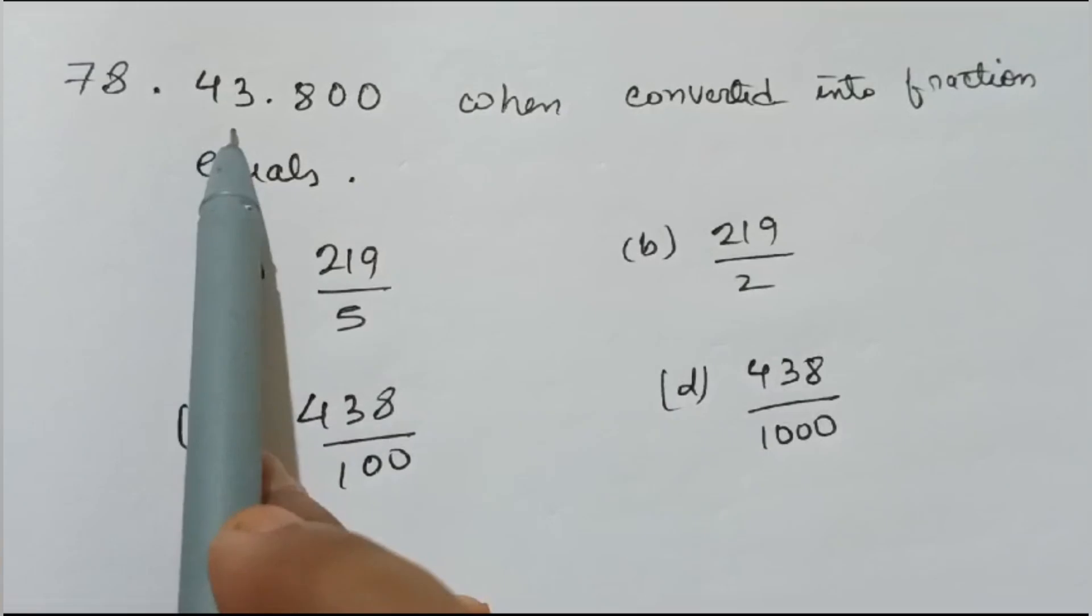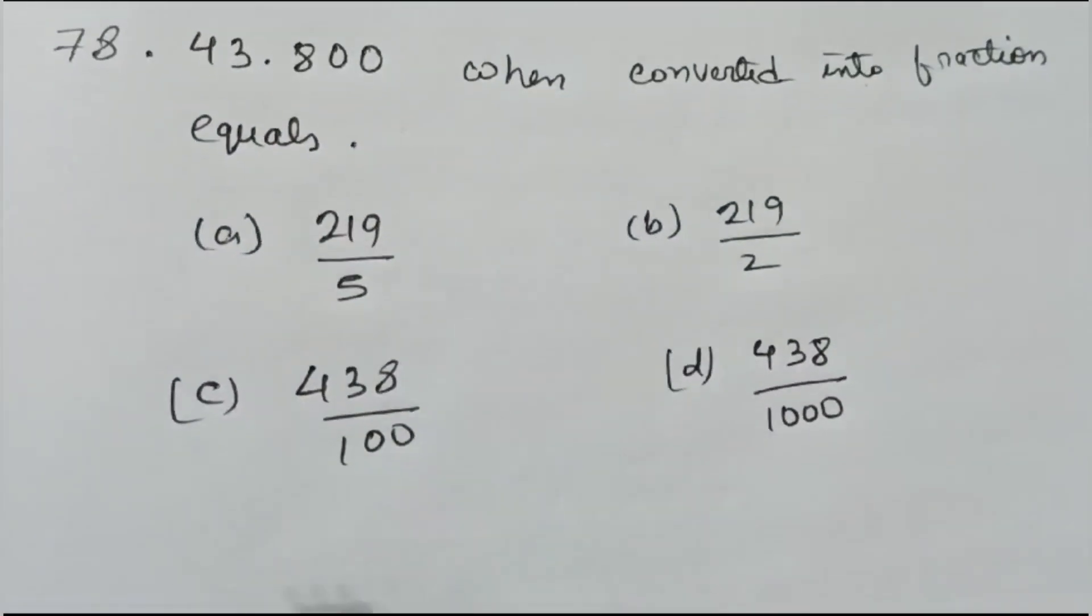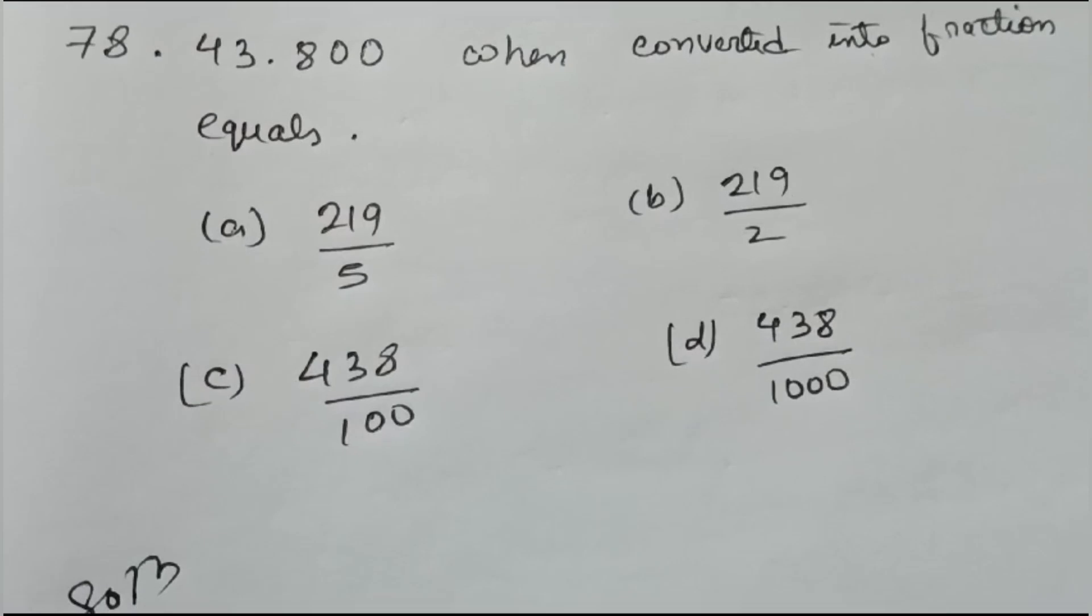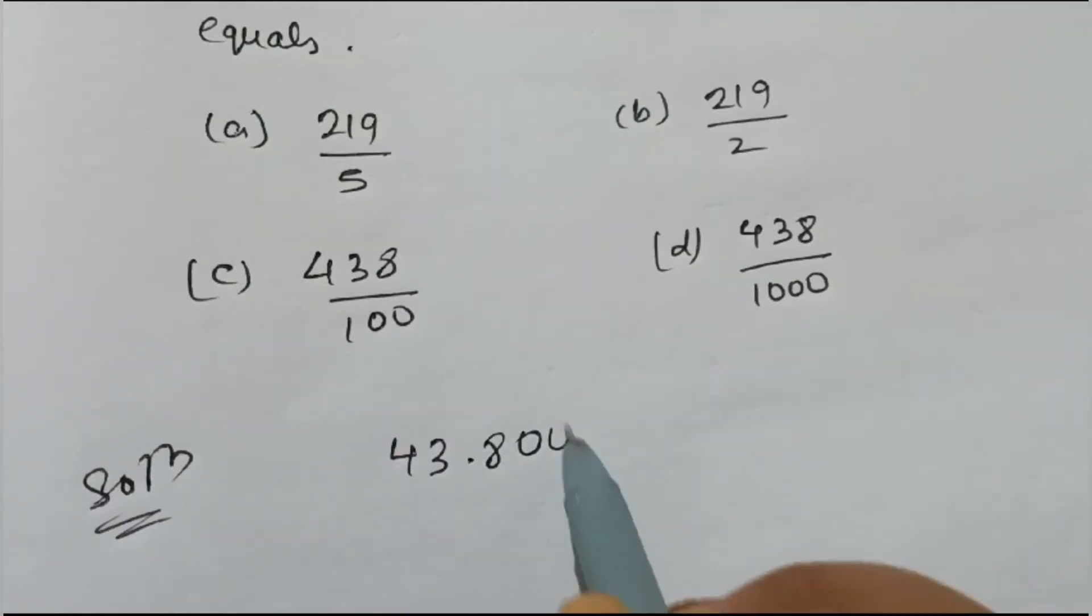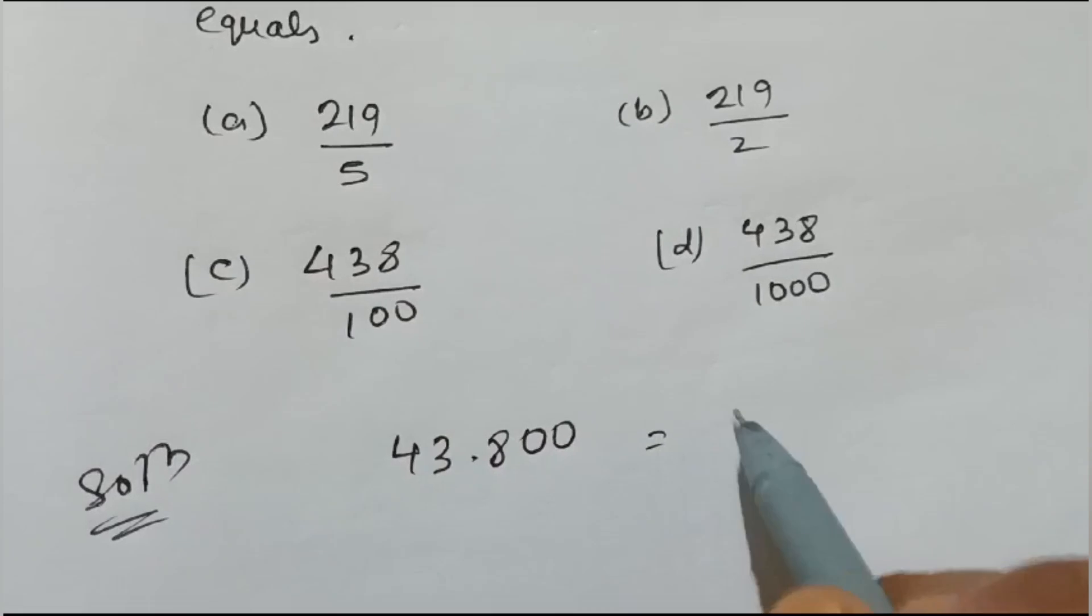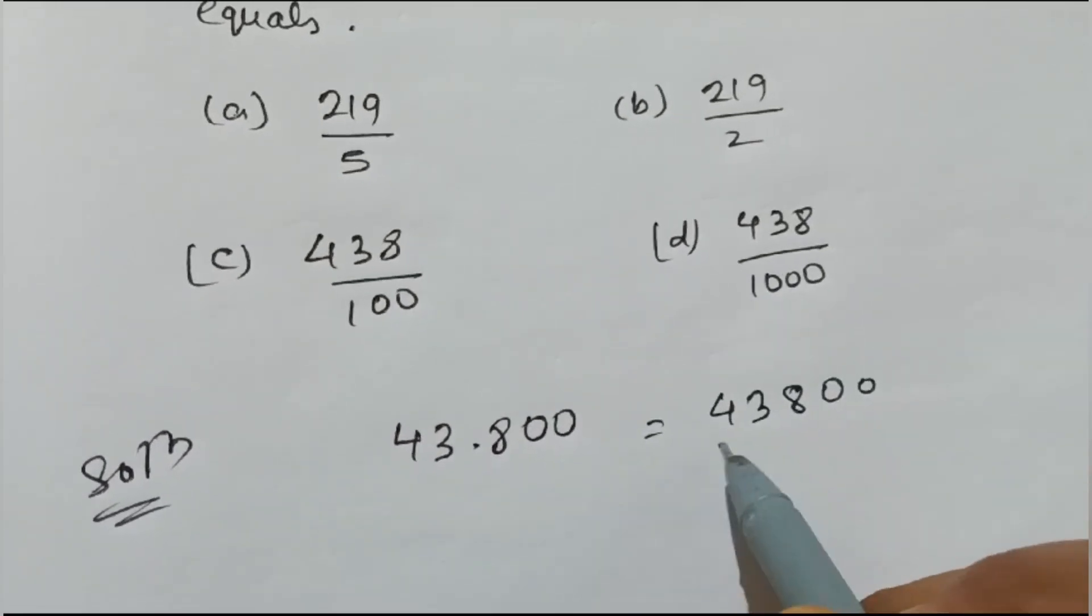Now let us see question number 78. 43.800 when converted into fraction equals - so we'll do the solution here. We'll write 43.800. How will you convert this into a fraction? You'll write 43800, then divided by...